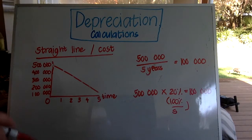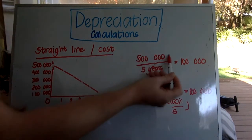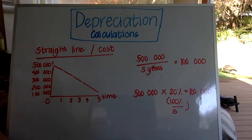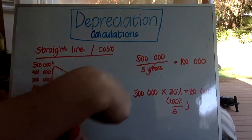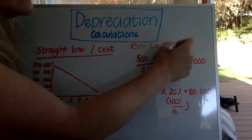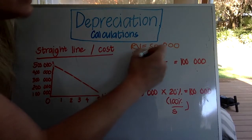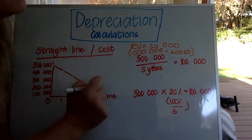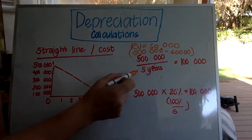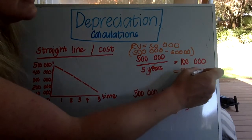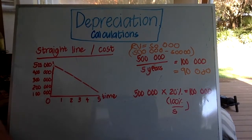If you had a residual value, you would simply take the cost less the residual value to work out how much you need to write off, and then divide that by the number of years. For example, if you had a residual value of 50,000, you would say 500,000 minus 50,000 which gives you 450,000, divided by five years, which means you would only take off 90,000 Rand each year.